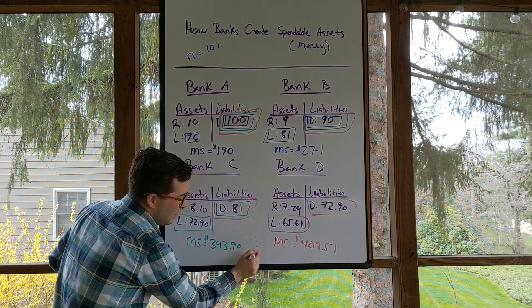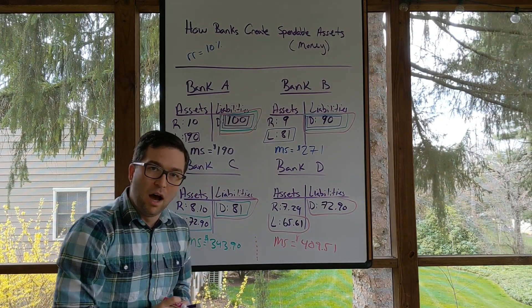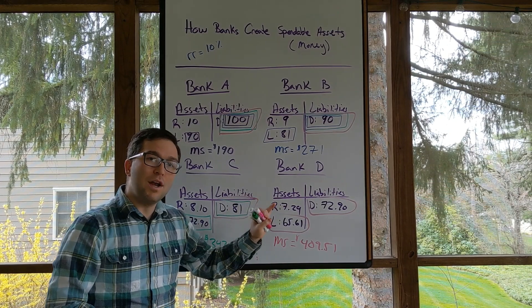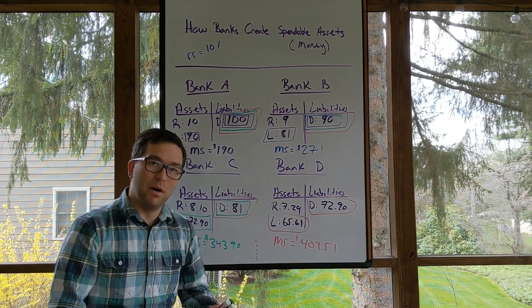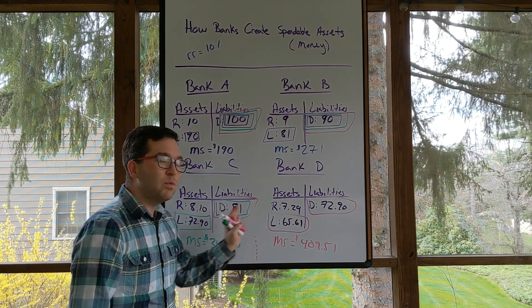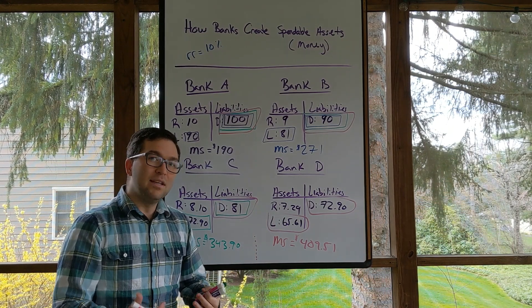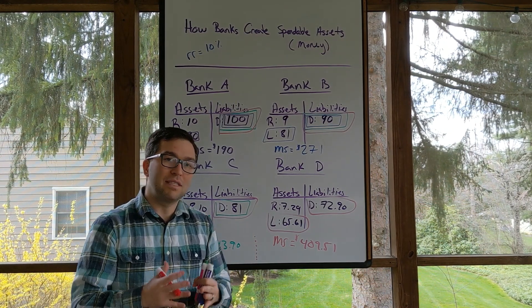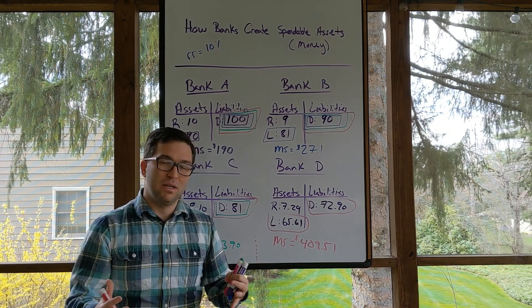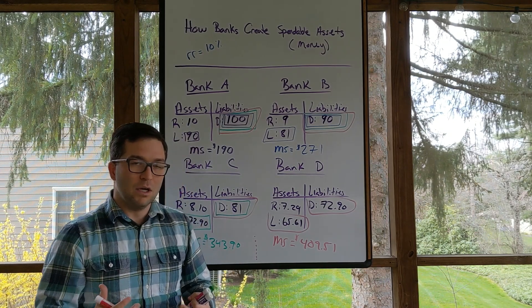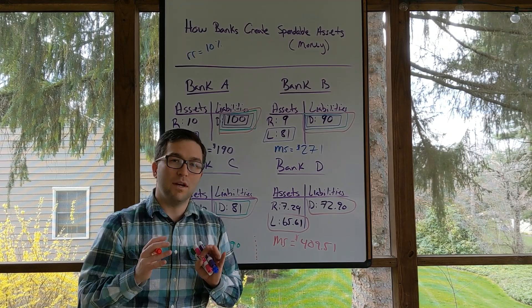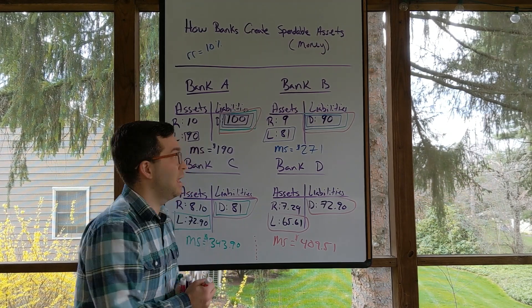And we can keep doing this process on and on and on. What we notice if we were to do this on and on and on and on until we finally run out of money in the system, this would have increased by 10 times. The way we would figure that out is through some algebra talking about sequences and expansions. Now, we don't need that for this class. So what I'm going to do is I'm just going to give you the equation for the simple deposit multiplier.